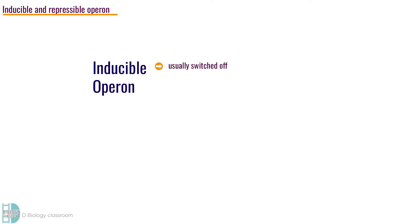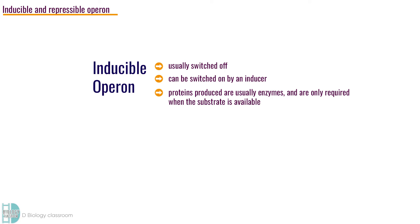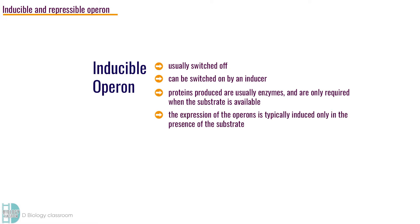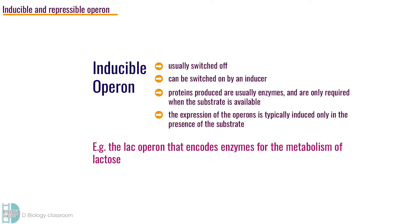Operons may be repressible or inducible. Inducible operons are usually switched off. They can be switched on by a molecule called an inducer. These proteins are usually enzymes and are only required when the substrate is available. Hence, the expression of the operons is typically induced only in the presence of the substrate. For example, the lac operon is an inducible operon that encodes enzymes for the metabolism of lactose.